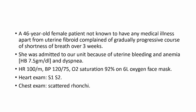A 46-year-old female patient, not known to have any medical illness apart from uterine fibroid, complained of a gradually progressive course of shortness of breath over three weeks. She was admitted to our unit because of uterine bleeding and anemia, hemoglobin 7.5, and dyspnea. Heart rate 100 per minute, blood pressure 120/75, O2 saturation 92% on 6-liter face mask. Heart examination: S1, S2. Chest examination: scattered rhonchi.